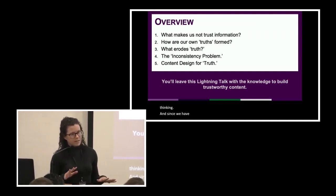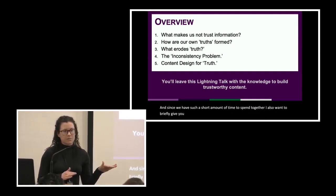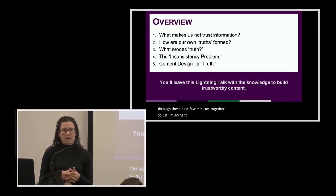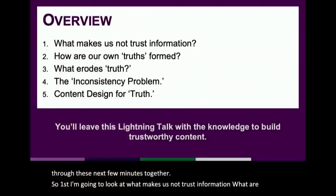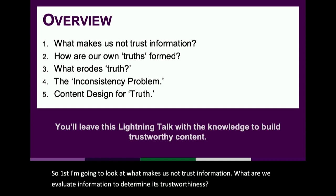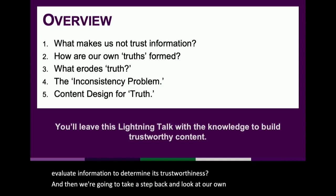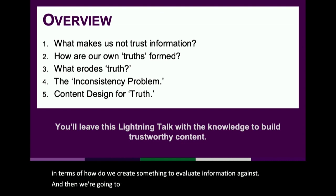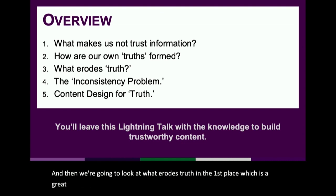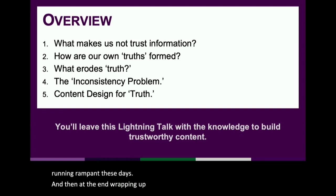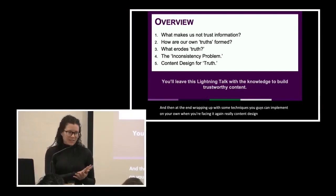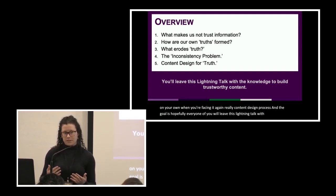Since we have a short amount of time together, let me give you an overview of our path forward. First, I'll look at what makes us not trust information — how we evaluate information to determine its trustworthiness. Then we'll step back and look at how our own truths are formed. After that, we'll examine what erodes truth, which is a great segue into what I call the inconsistency problem. Finally, we'll wrap up with techniques you can implement when facing an unruly content design process, so everyone leaves knowing how to build trustworthy content.